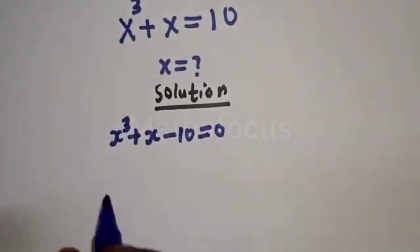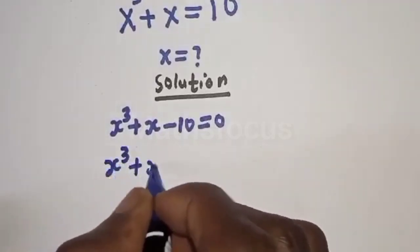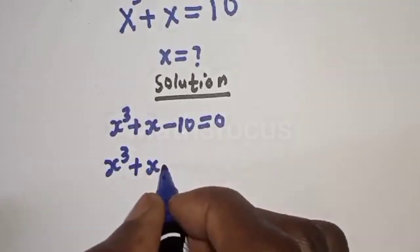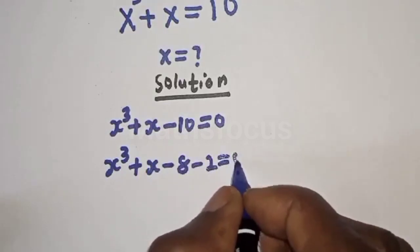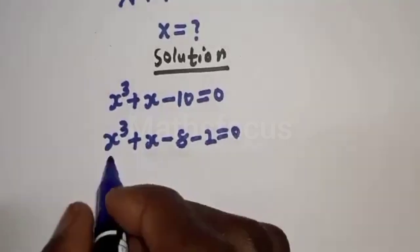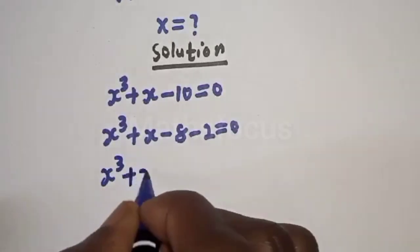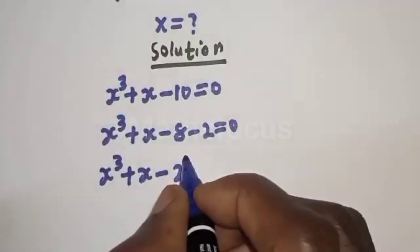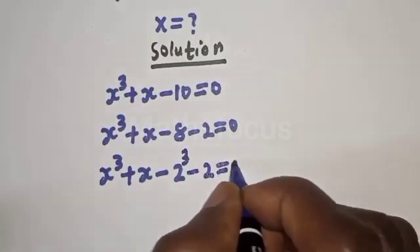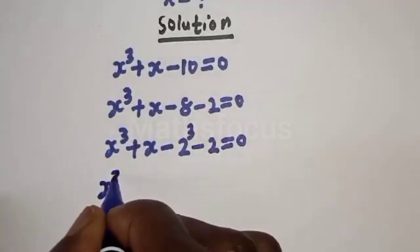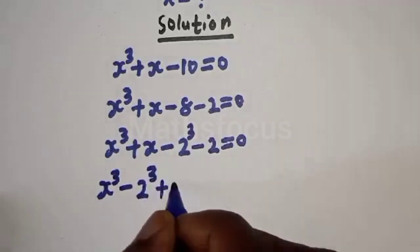Then s raised to power 3 plus s minus 10 can be written as s raised to power 3 minus 2 raised to power 3, plus s minus 2, is equal to zero. So we have s raised to power 3 minus 2 raised to power 3, plus s minus 2, equal to zero.